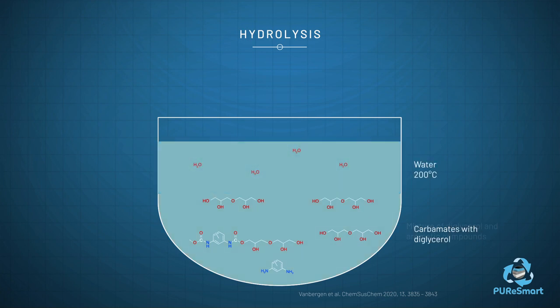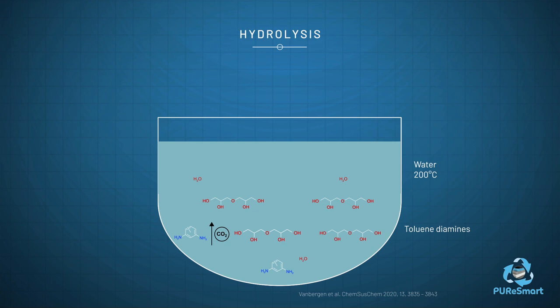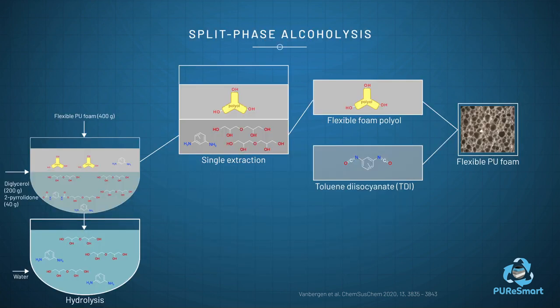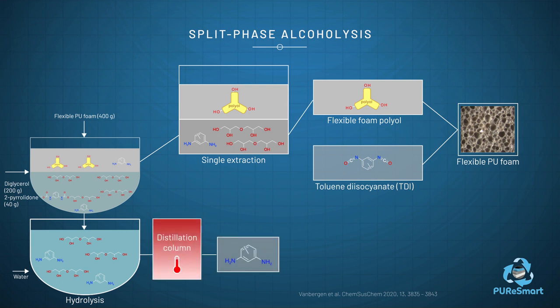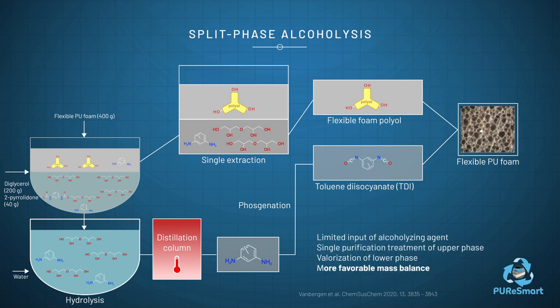The lower phase is therefore subjected to a hydrolysis at 200 degrees Celsius. The hydrolysis of the aminocarbonates with diglycerol results in partial conversion to toluenediamines and diglycerol. The toluenediamines can be separated by distillation and subsequently phosgenated to toluene diisocyanate. This could allow the reuse of the alcoholising agent in new alcoholysis reactions.